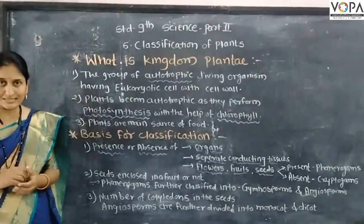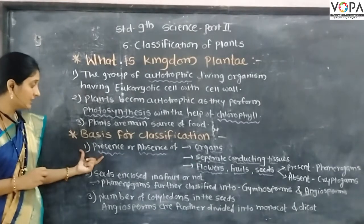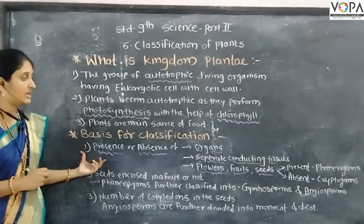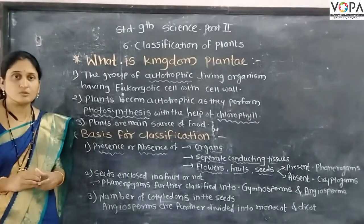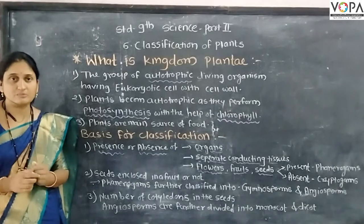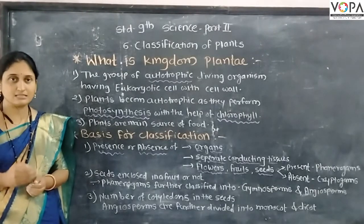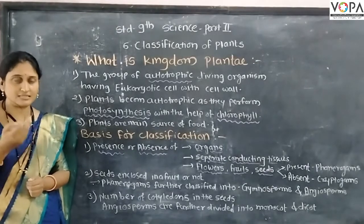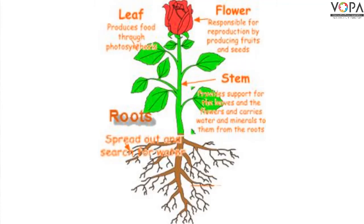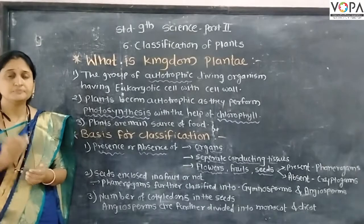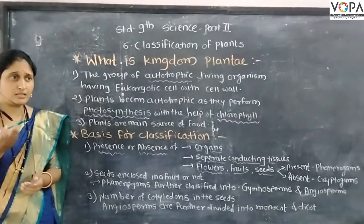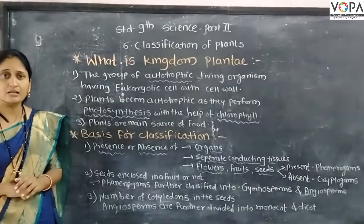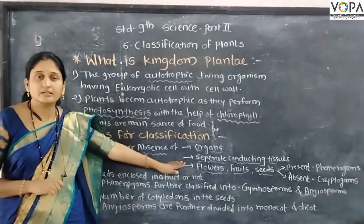There are criteria on the mechanism of classification. These are just similar to classification. Now we have the criteria on the presence of the organs. The organs of the plants are the organs of the plants.